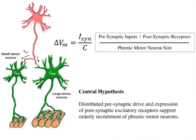Based on the size principle, we can simplify motor unit activation such that size is the main determinant of orderly recruitment from small to large motor neurons. However, differences in presynaptic inputs and postsynaptic receptor expression, among many other players, would also influence motor unit excitability. So we wanted to examine differences in both presynaptic excitatory inputs and postsynaptic receptor mRNA expression across motor neurons innervating the diaphragm in a size-dependent fashion.